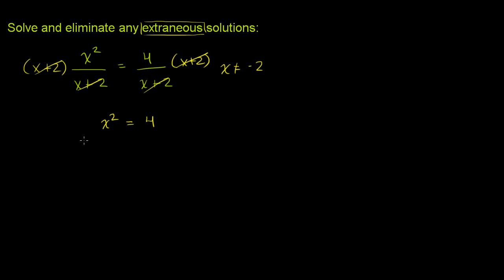And you could probably do this in your head, but I want to do it properly. So you could subtract 4 from both sides, do it in kind of the proper quadratic equation form. So x squared minus 4 is equal to 0. I just subtracted 4 from both sides. And so you can factor this. This is a difference of squares. You get x plus 2 times x minus 2 is equal to 0.